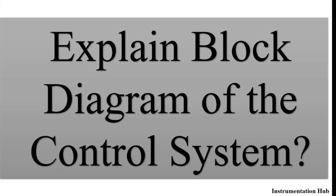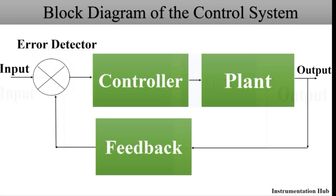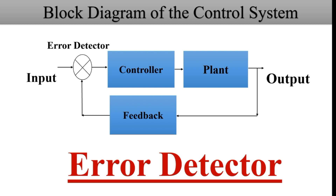The next question: explain the block diagram of the control system. The block diagram of the control system majorly includes six parameters: input, error detector, controller, process or plant, output, and — most importantly — feedback. First is input: input is a signal which is applied to the system from external, natural, or manmade sources. Next is the error detector: it is a device used to find the difference between feedback and the input, and sends it to the controller to take appropriate action to match the input and output signal.